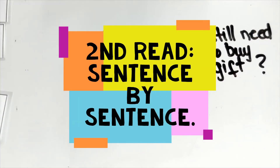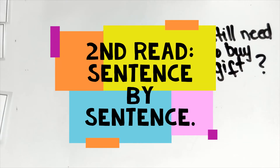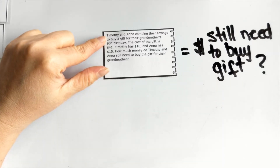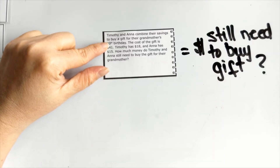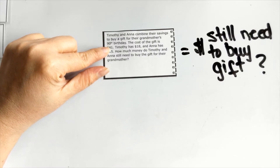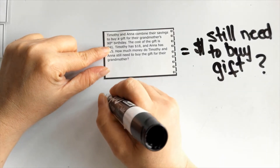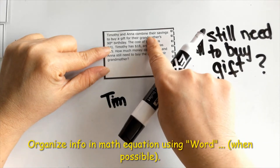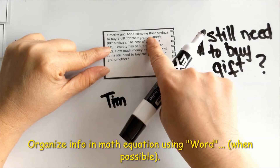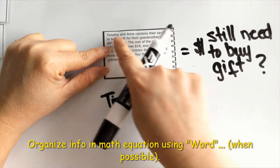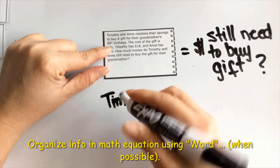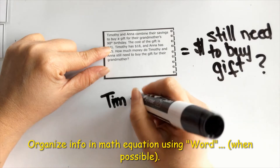For the second read, I like to read it sentence by sentence and organize information from the story. 'Timothy and Anna combined their savings to buy a gift for their grandmother's 90th birthday.' I would write down the information I know from this sentence — it tells me that Timothy and Anna combined, and the word 'combined' tells me that they're adding.